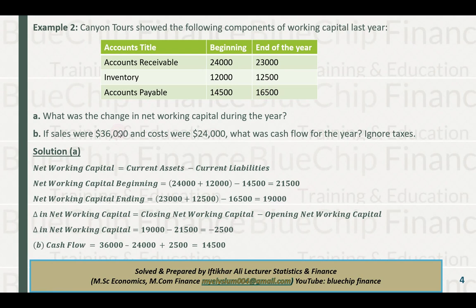For cash flow: revenues minus costs, adjusted for change in net working capital. Revenues are 36,000 and cost is 24,000. Because the change in net working capital is minus 2,500, it gets added back. If the change were positive it would be subtracted. So: 36,000 minus 24,000 plus 2,500 equals 14,500. Cash flow is 14,500.